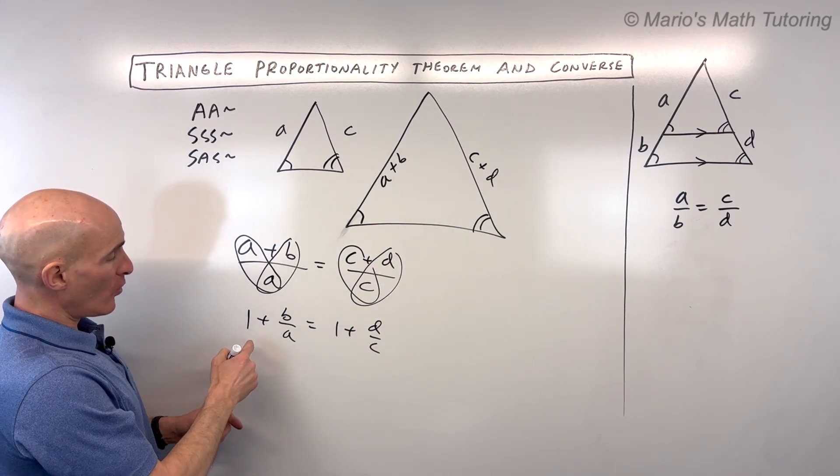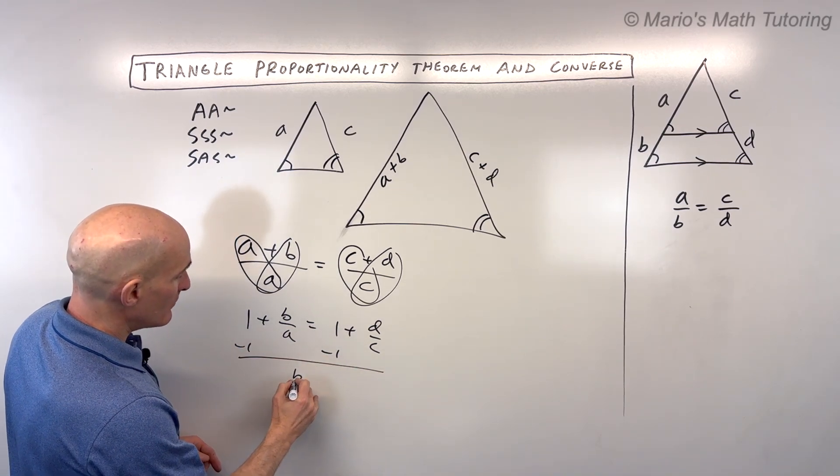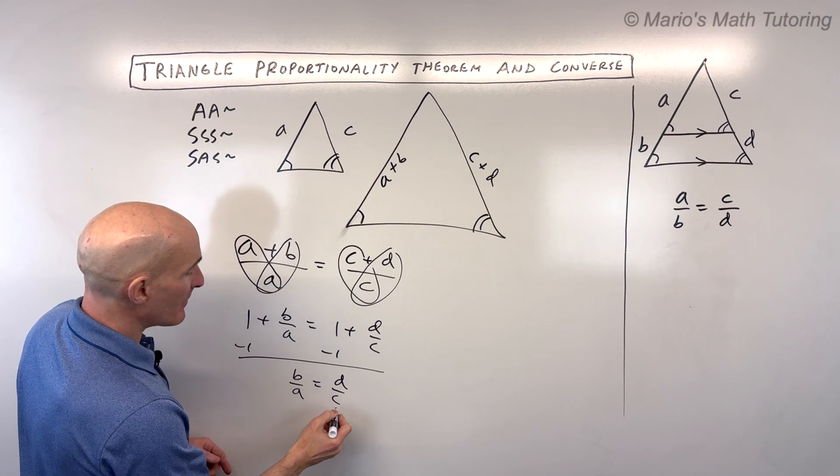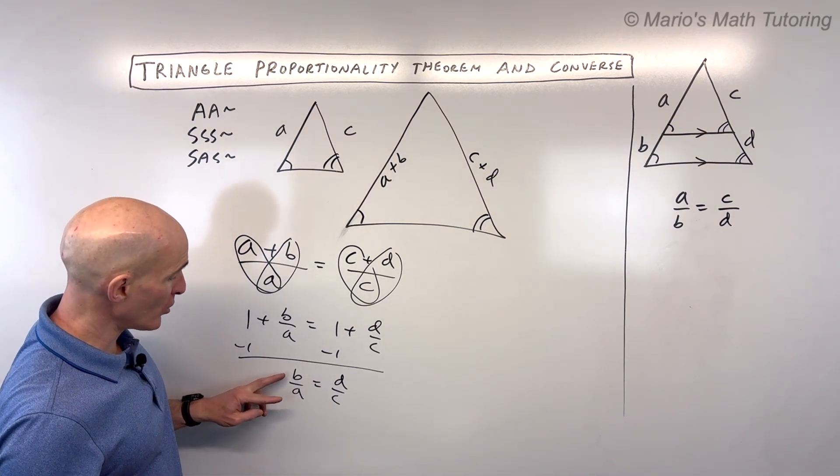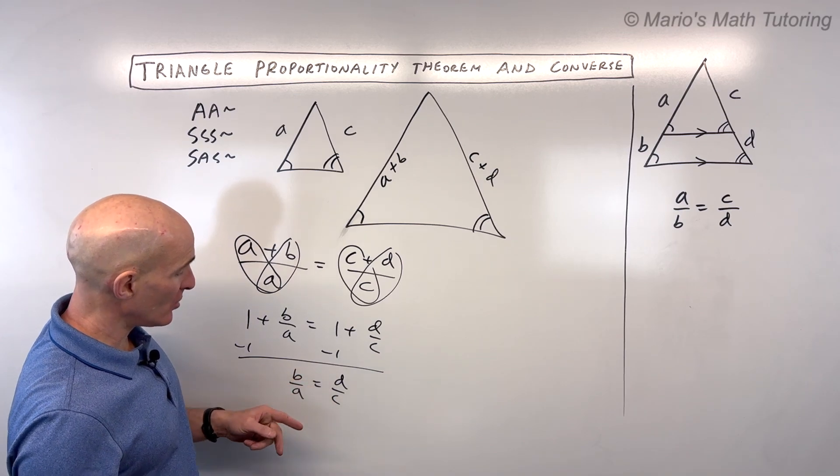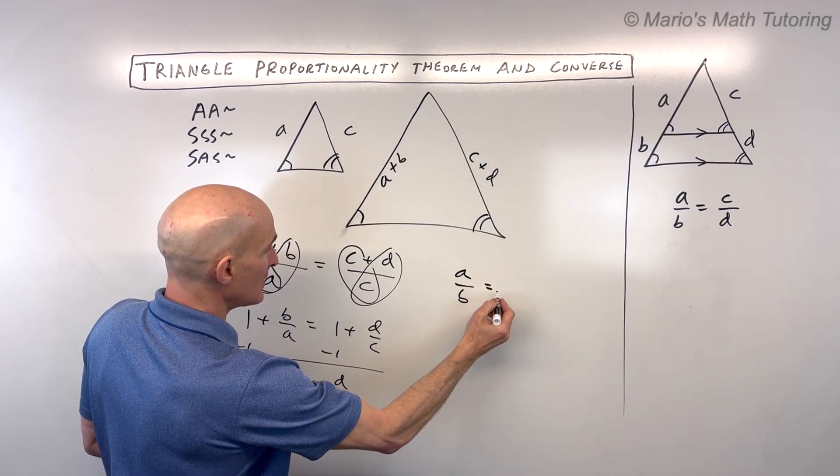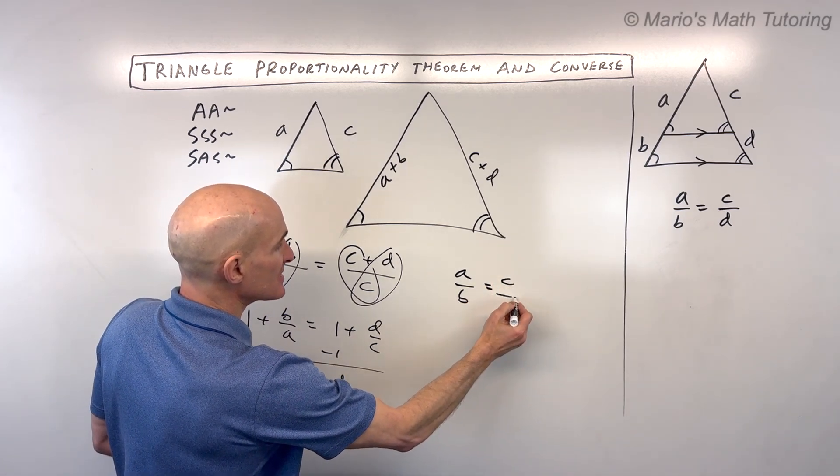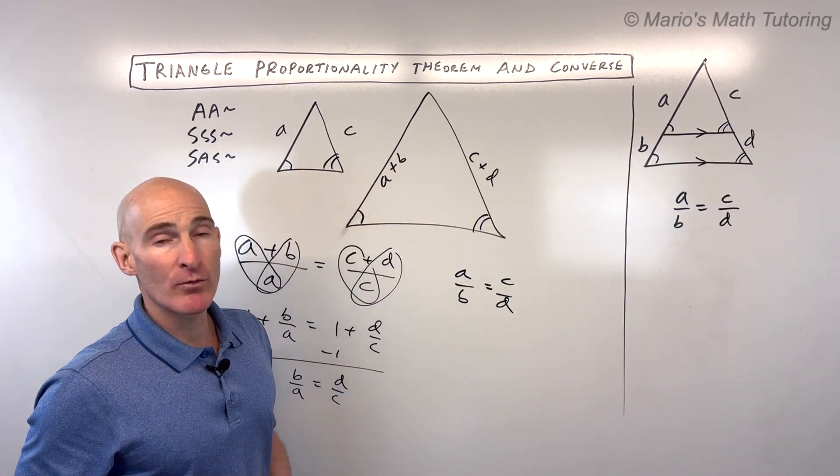If we subtract 1 from both sides of this equation, we get B divided by A equals D divided by C. Now remember what we talked about earlier in this video about the properties of proportions. We can take the reciprocal as long as we do it to both sides, so that's going to be A over B equals C over D. And that's what we have right here. So that's our triangle proportionality theorem.